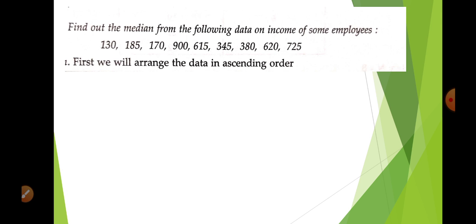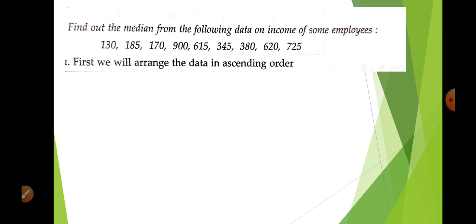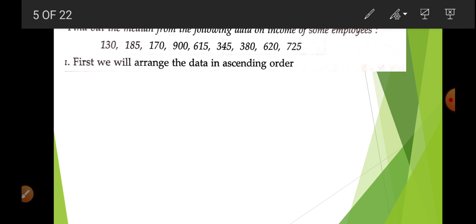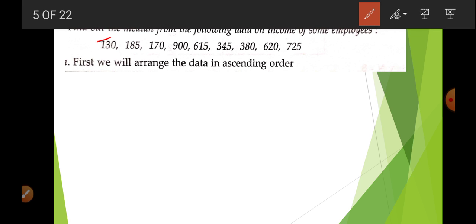There is the first question: find out the median from the following data on the income of some employees. Here you can see how many numbers are given — there are total 9 numbers. Remember, first step: arrange in ascending order. Second: use the equation M = (N+1)/2. Then you are able to find out the median. So let us calculate it.